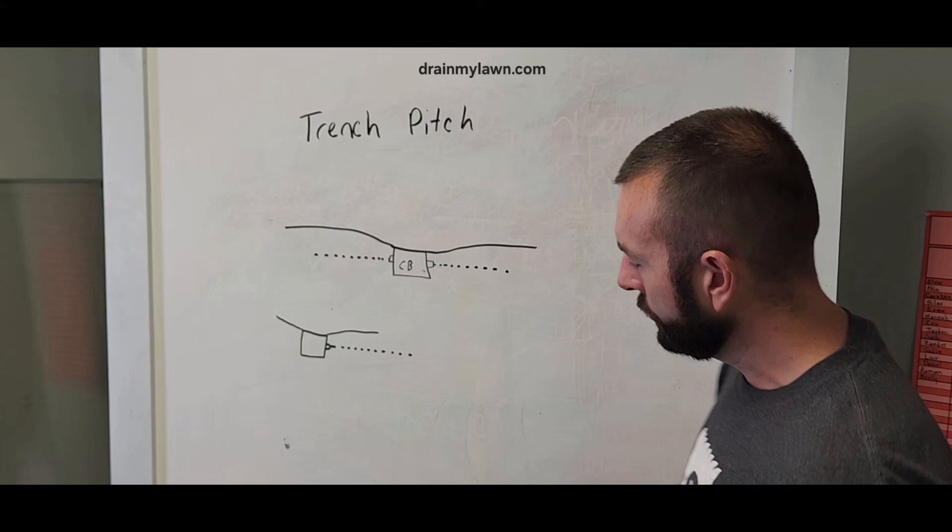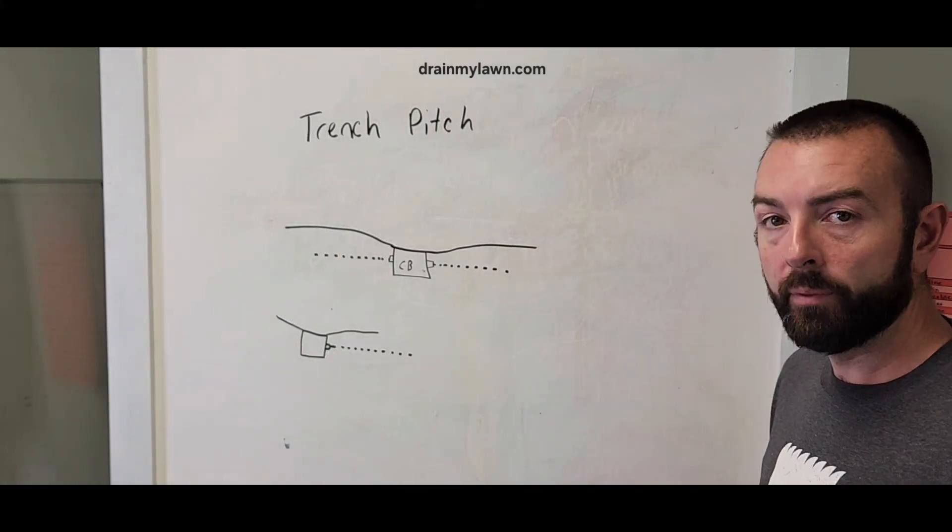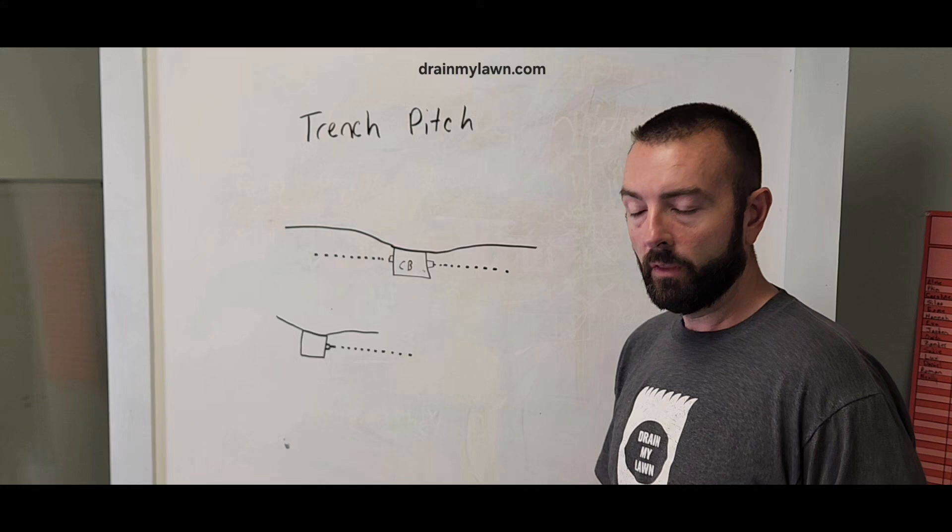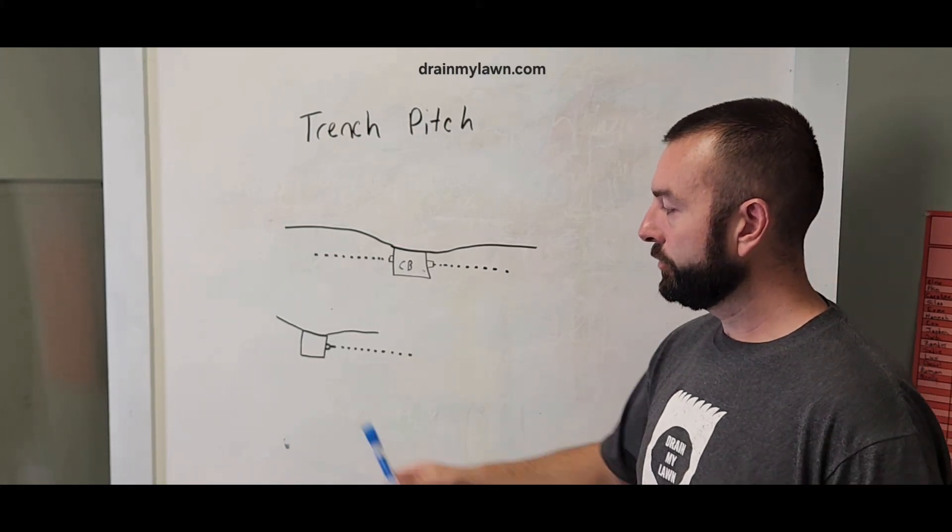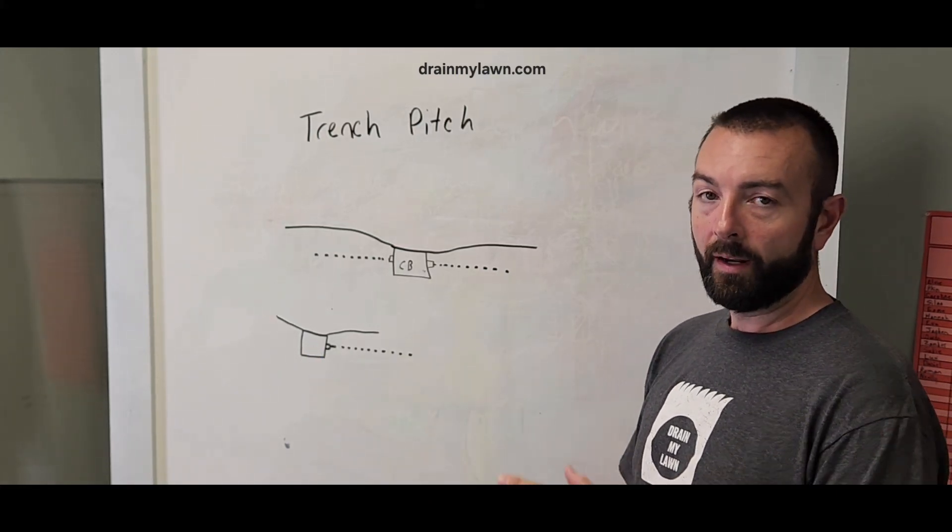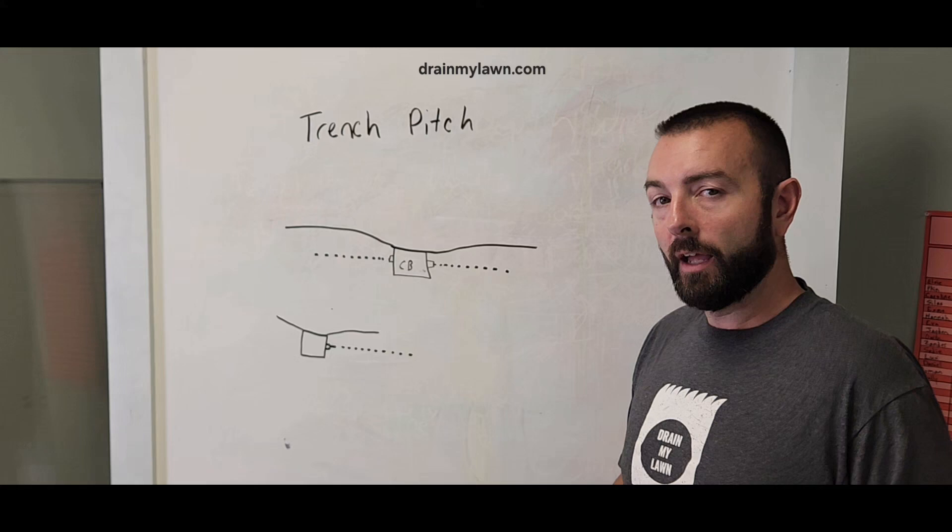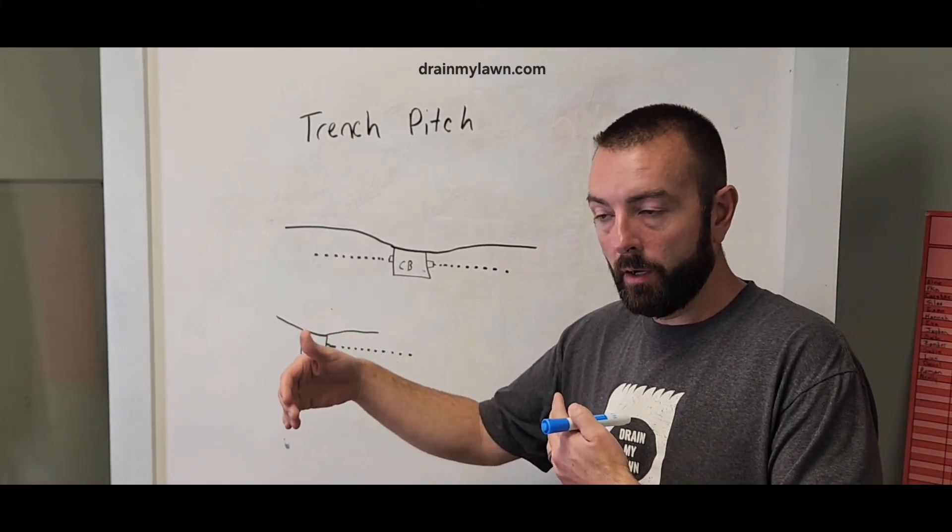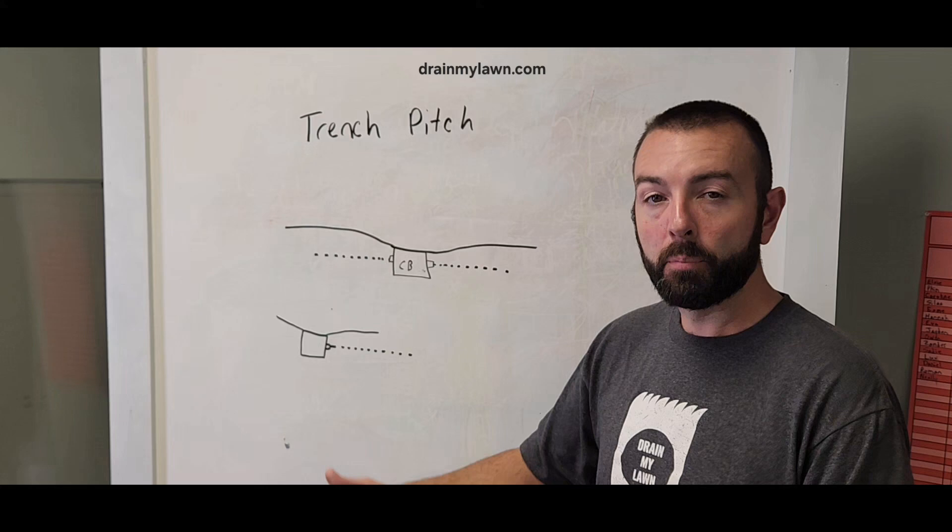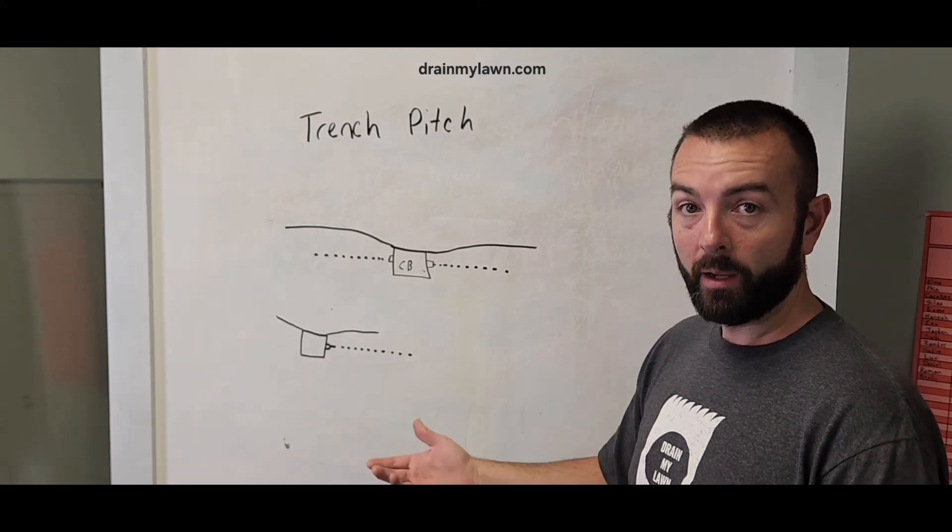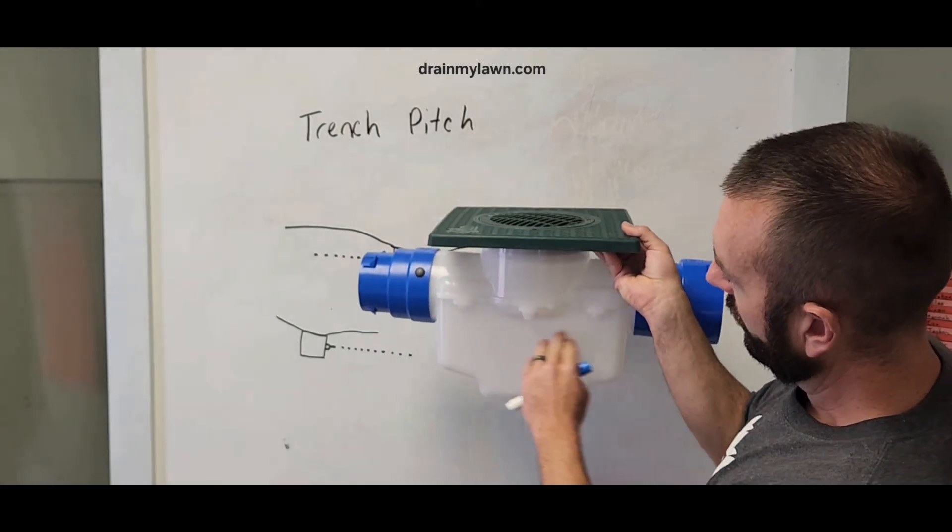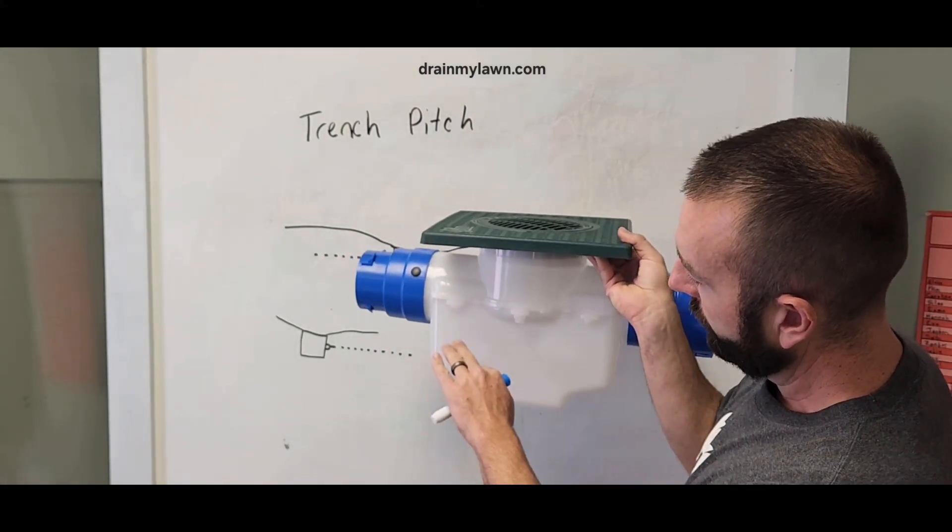I'm going to address one more issue that can trip you up if you're not paying attention. When you start a system that starts with a catch basin, the catch basin trench is going to be deeper than your actual pipe because the catch basin has a sump. This area is called the sump. This area is going to be below.